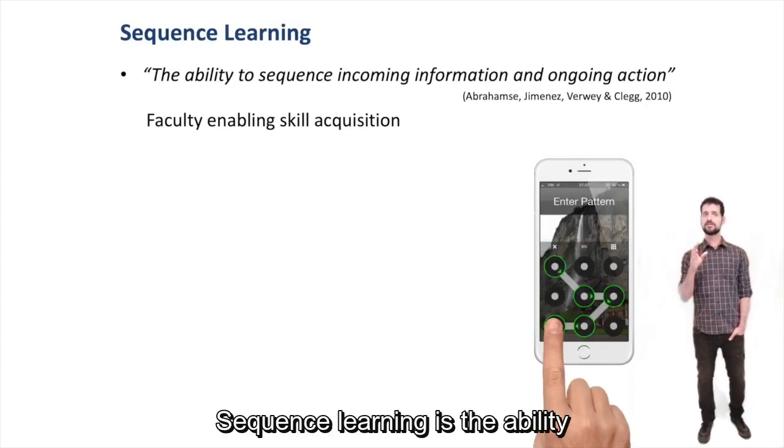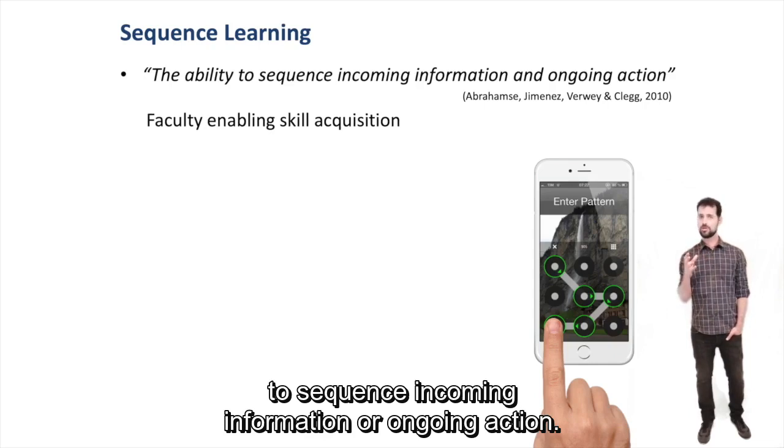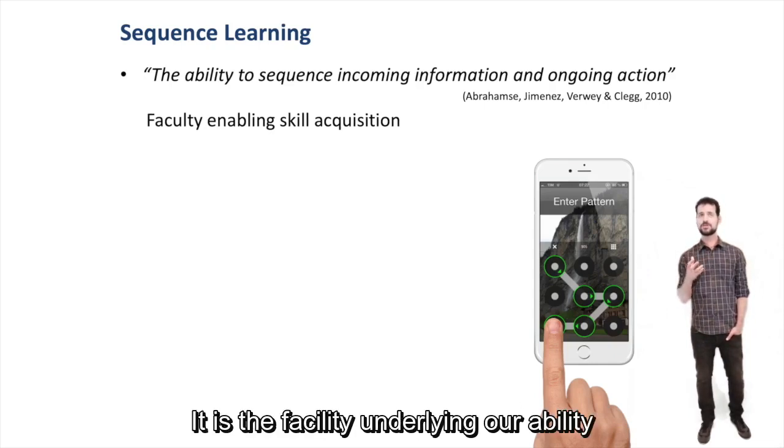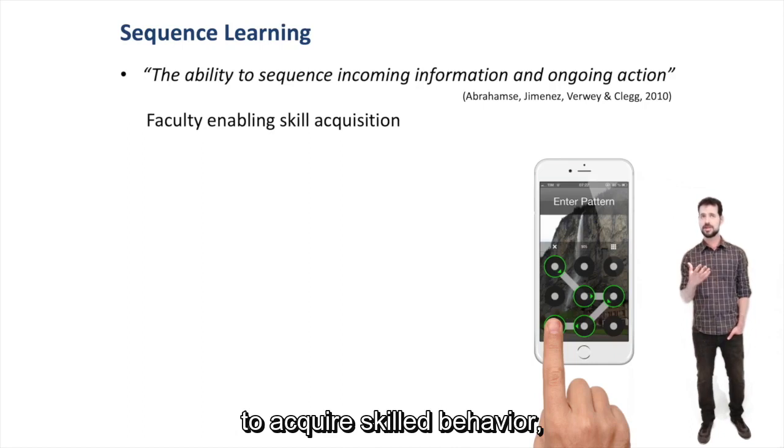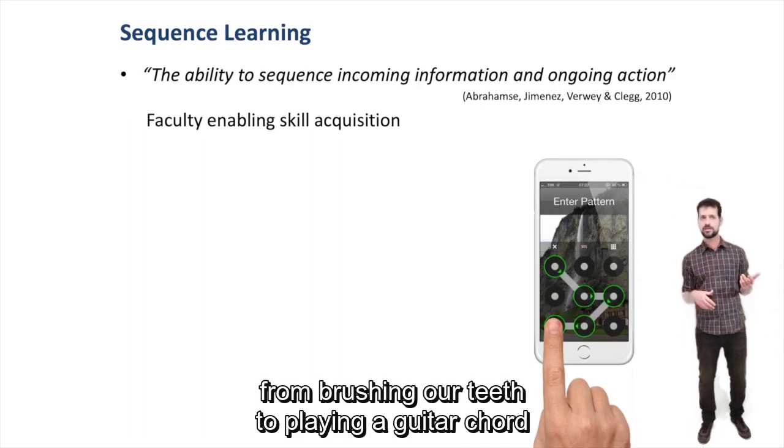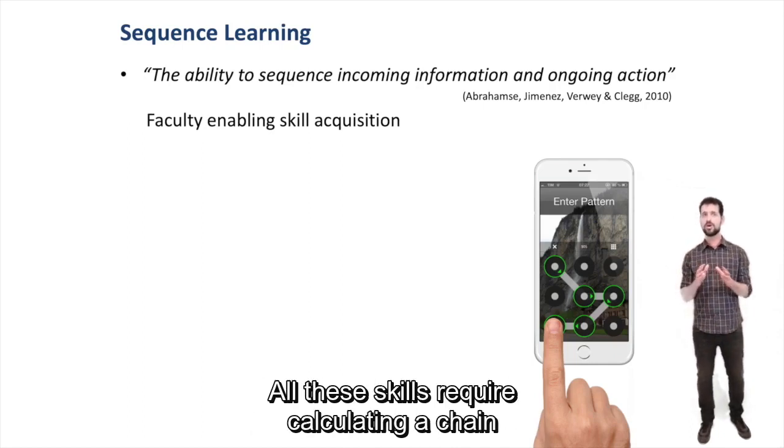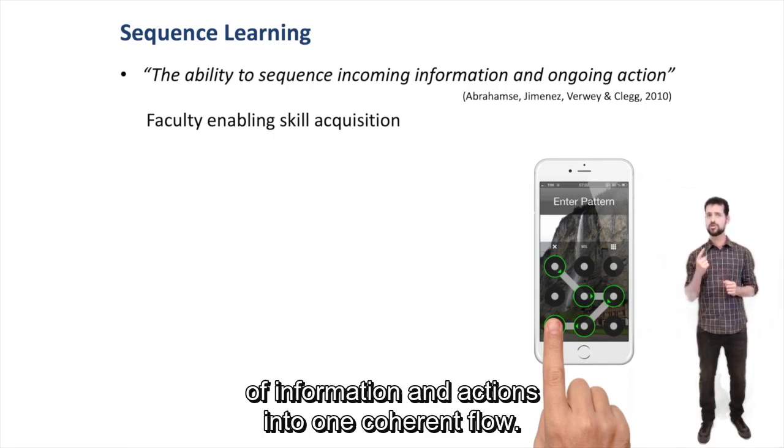Sequence learning is the ability to sequence incoming information and ongoing action. This is the faculty underlying our ability to acquire skilled behavior, from brushing our teeth to playing a guitar chord to reciting the alphabet. All these skills require encapsulating a chain of information and actions into one coherent whole.